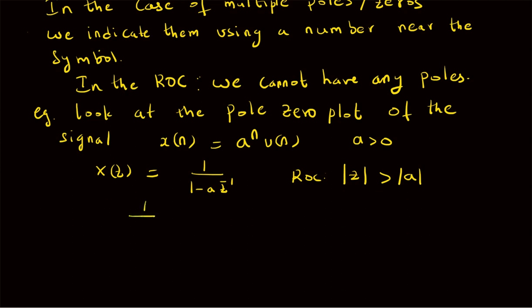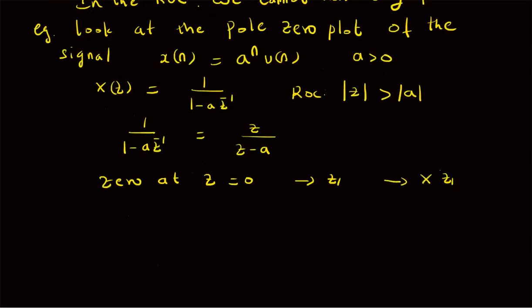To construct the pole-zero plot, the Z transform 1 over (1 minus a z-inverse) can be rewritten as z over (z minus a). This means we have a zero at z equals zero — that is, X(z₁) equals zero where z₁ equals zero. We also have a pole at z equals a, where X(p₁) equals infinity.